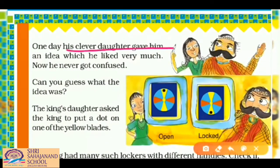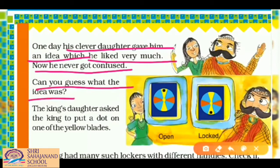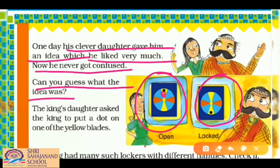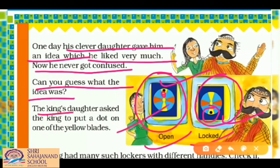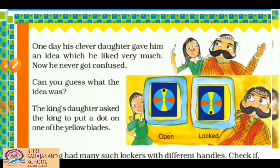One day his clever daughter gave him an idea which he liked very much, and after that he never got confused. You can see in the pictures of the locker: on the yellow shape there is a black dot. If the dot is upside, the locker is open; if the dot is downside, the locker is locked.